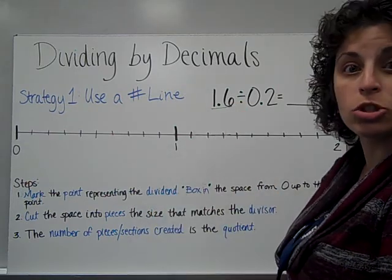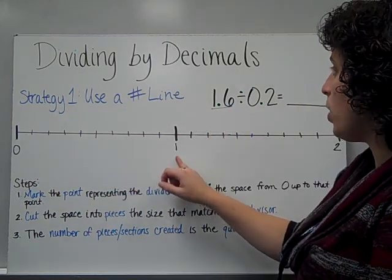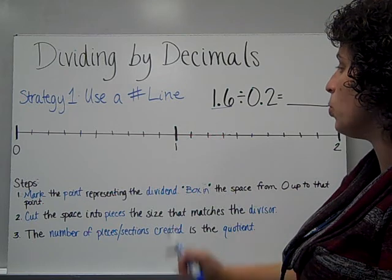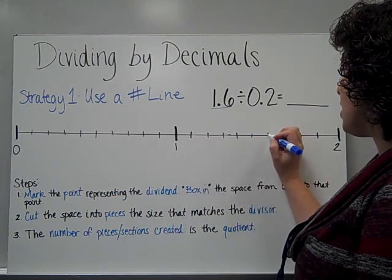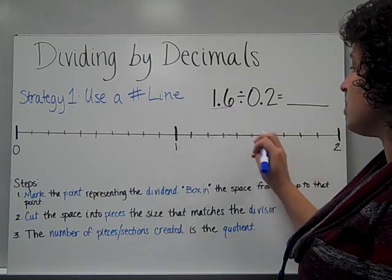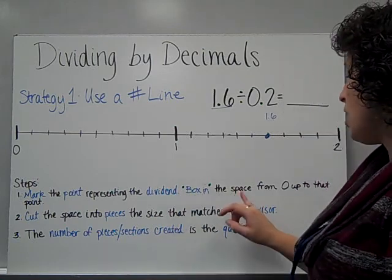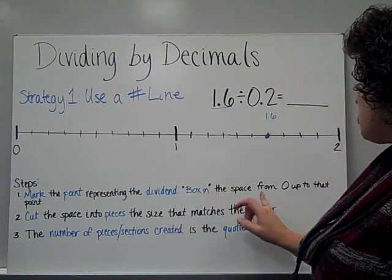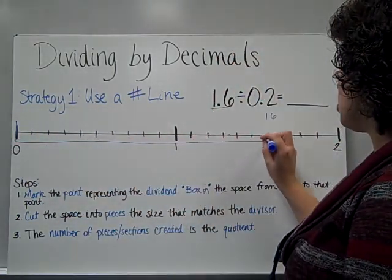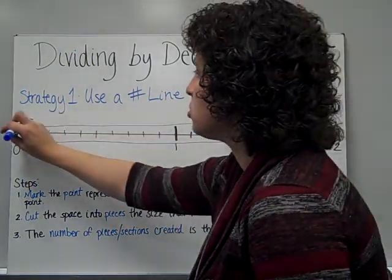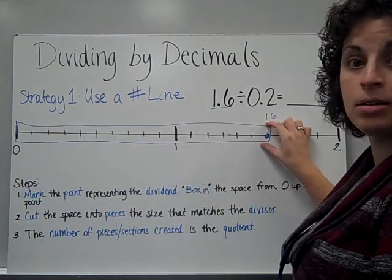The dividend is our larger number that we are dividing, so that is 1 and 6 tenths. Here's one — I need 6 tenths more, so this would be 1, 2, 3, 4, 5, 6. So I'm marking where the dividend is on the number line, and this is my 1 and 6 tenths. Next I'm going to box in the space from 0 up until this point — this is showing me how much I have to be divided. All of this that I boxed in is the 1 and 6 tenths.